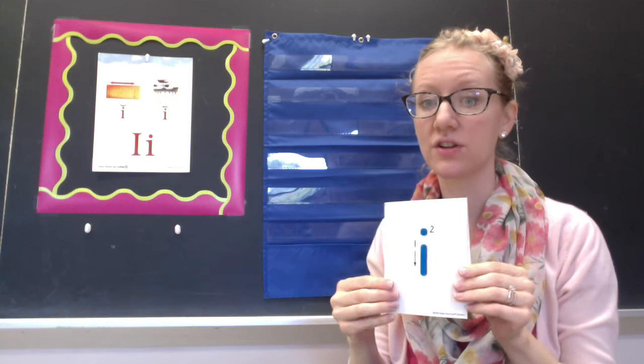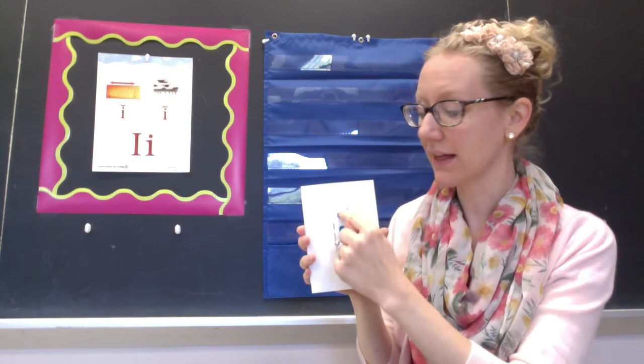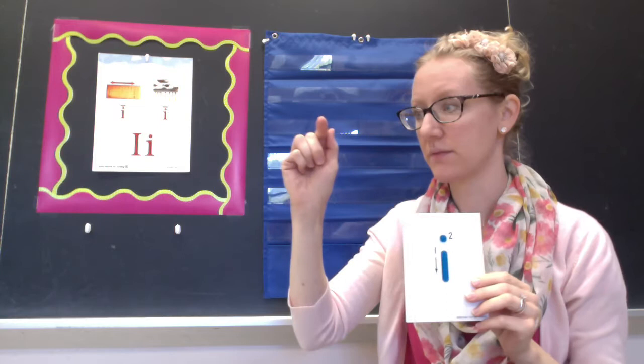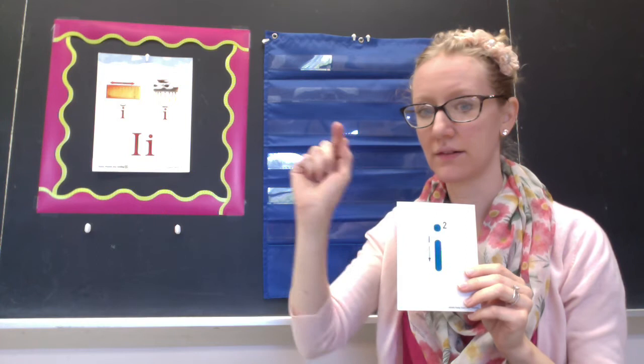For lowercase i, you're going to start in the middle of your line. Once again, make your straight line down to the bottom and then make a little dot. The dot is floating up above your line. It's not touching. And it's not too big and not too small. You've got to work on making it just the right size. Let's try this one. Straight line down, make a little dot. Straight line down, make a little dot.